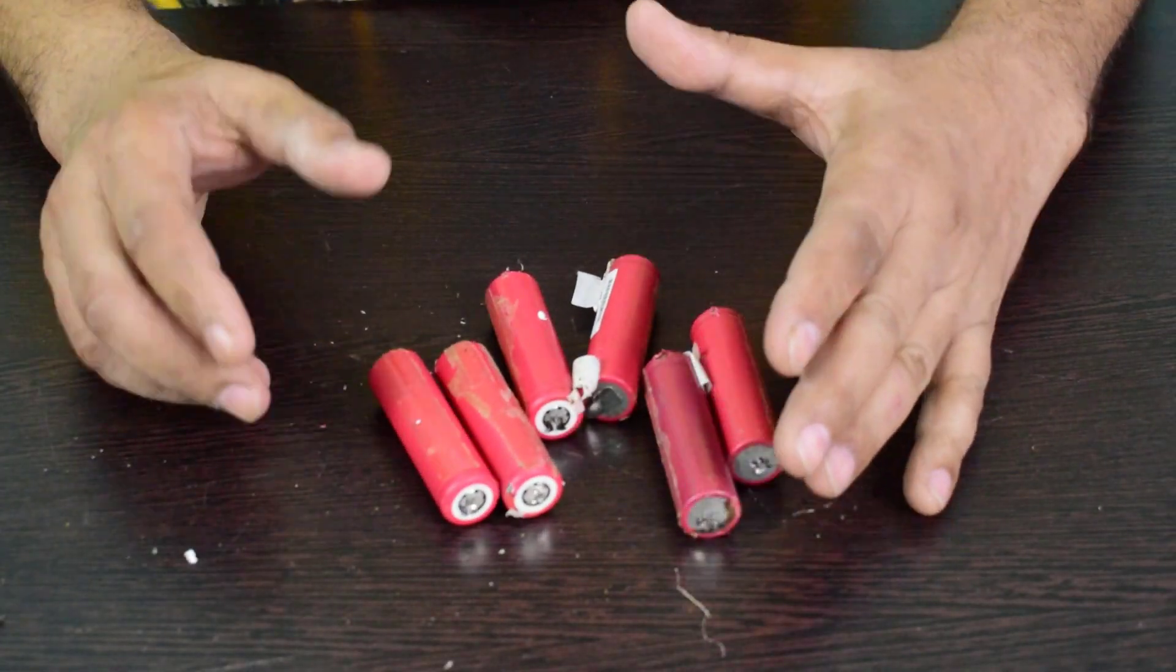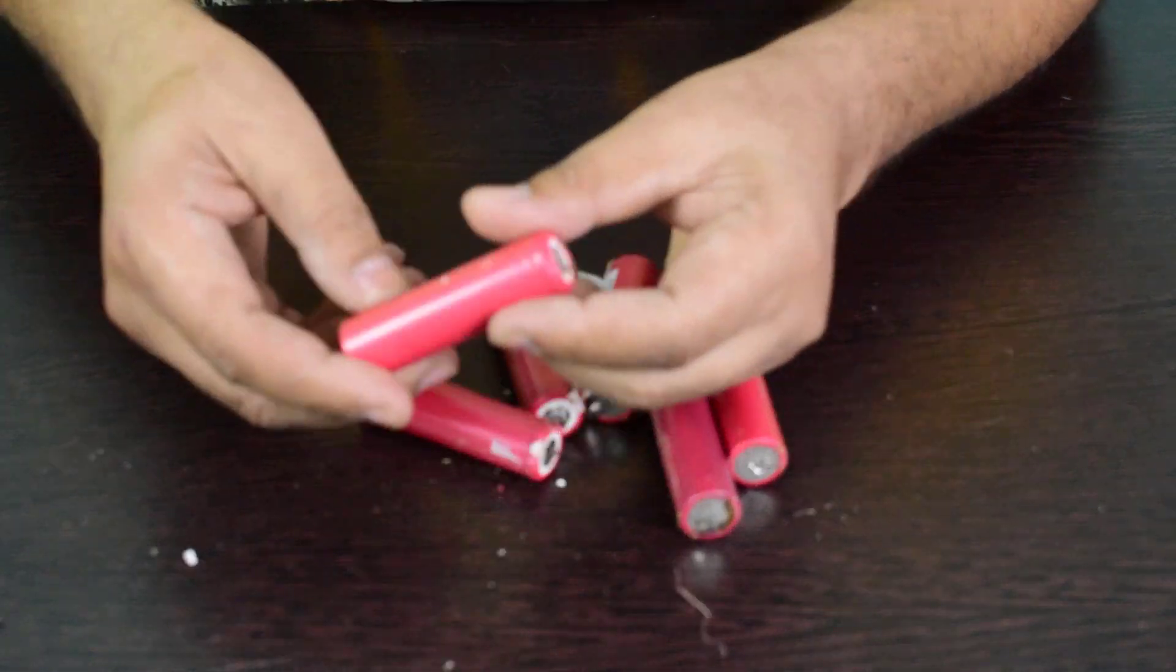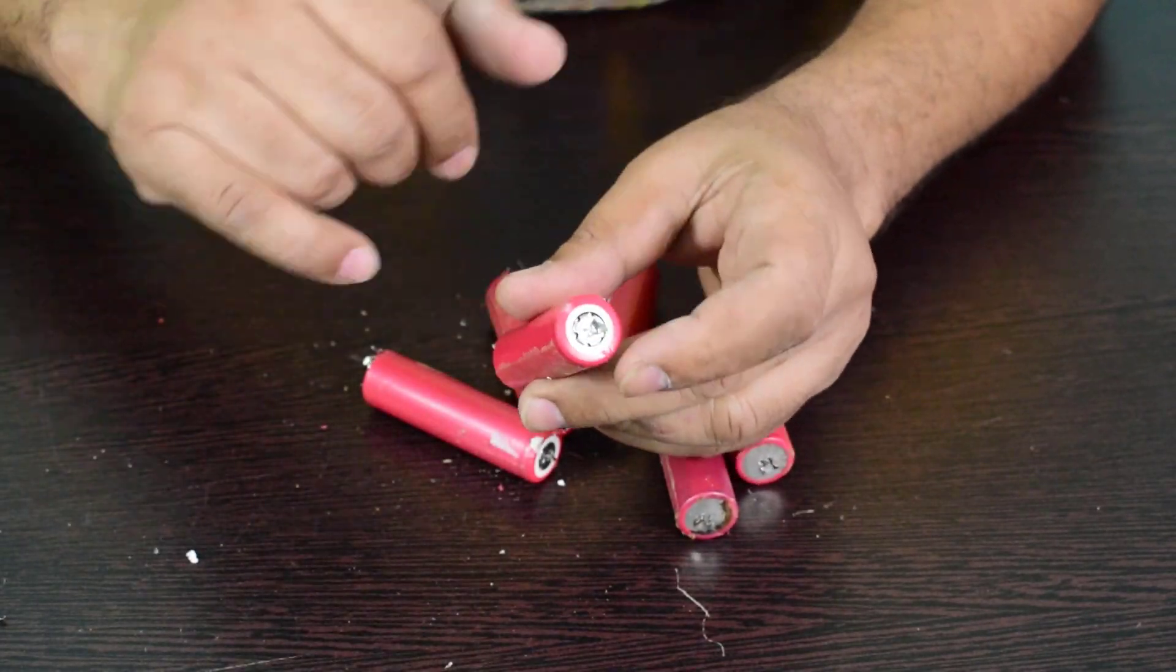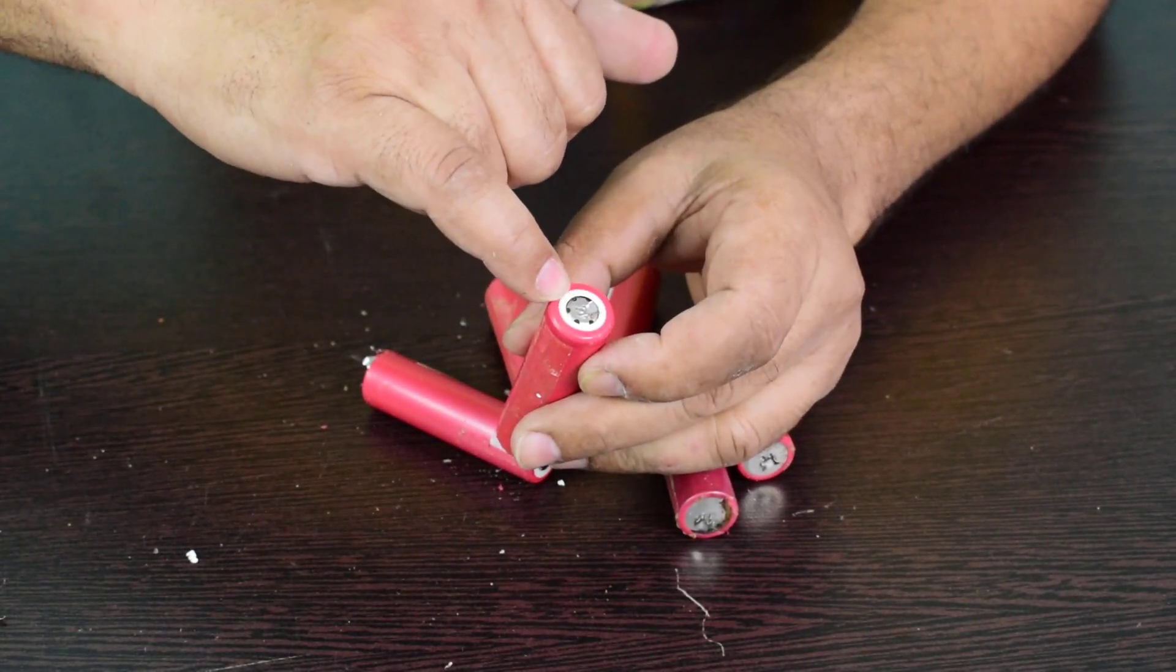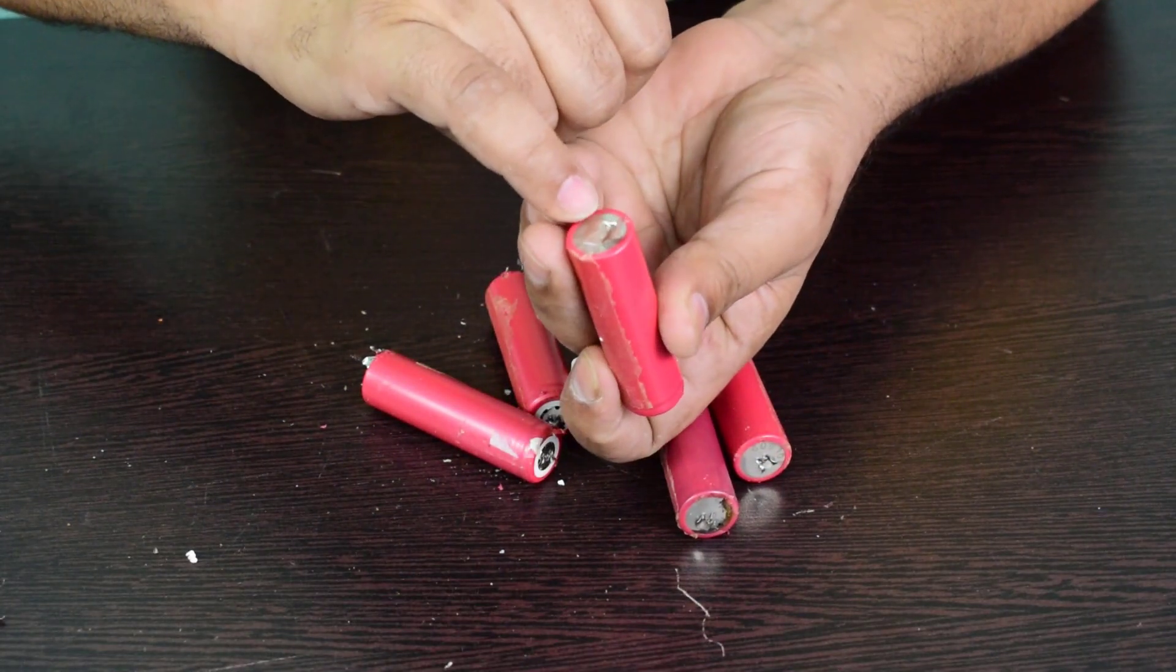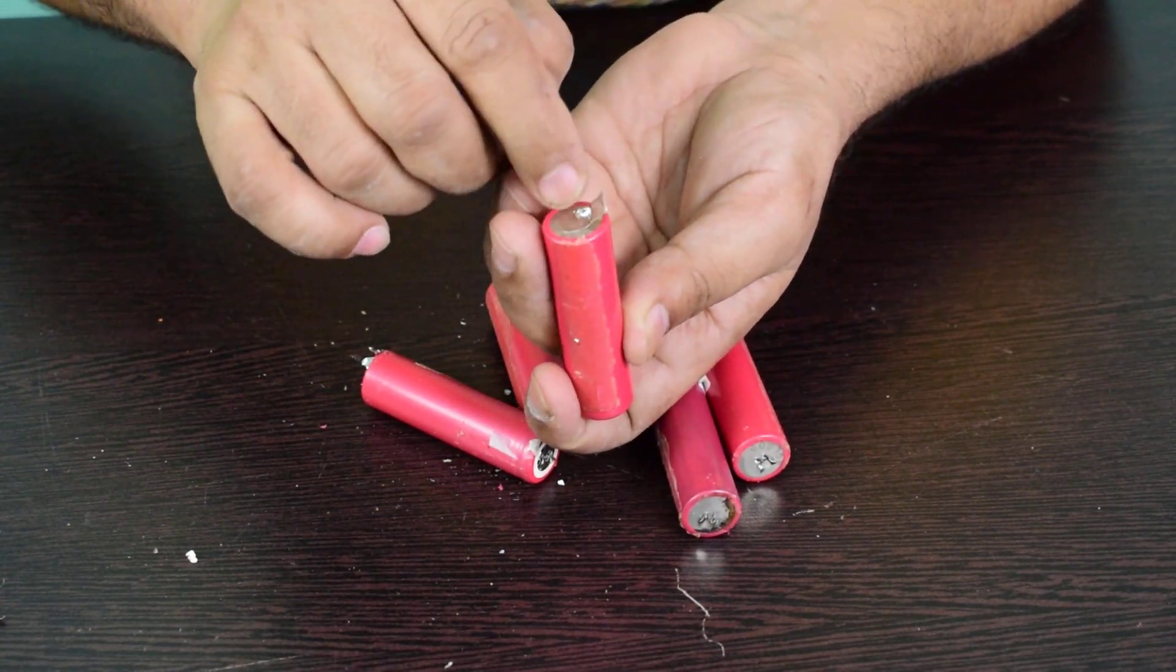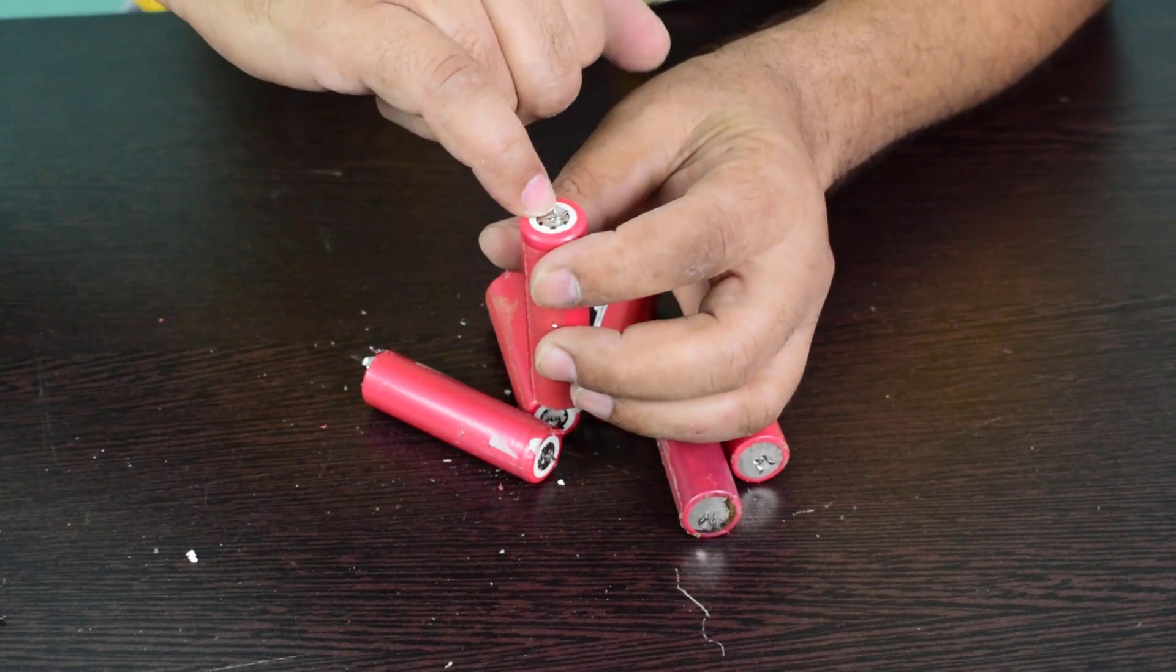We have got the six cells and the two original ones. This is the positive end of lithium-ion cell and this is the negative end of lithium-ion cell. The difference is that this is bigger in size and this is small in size.